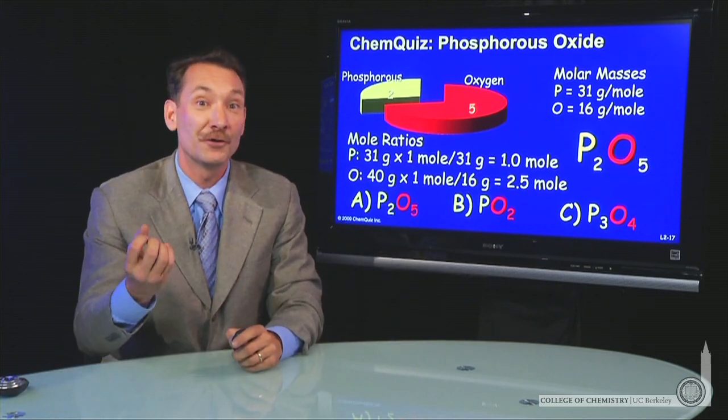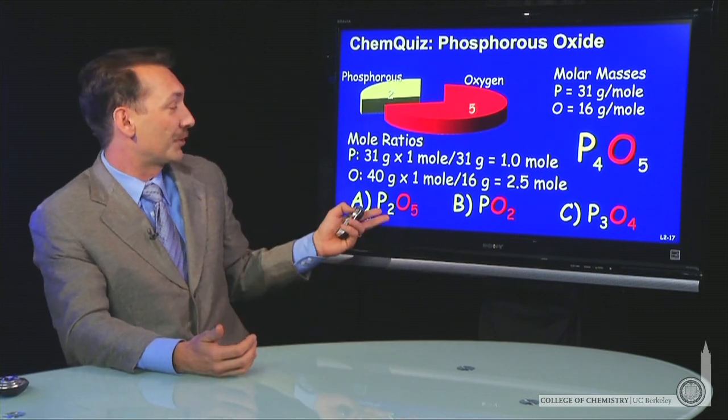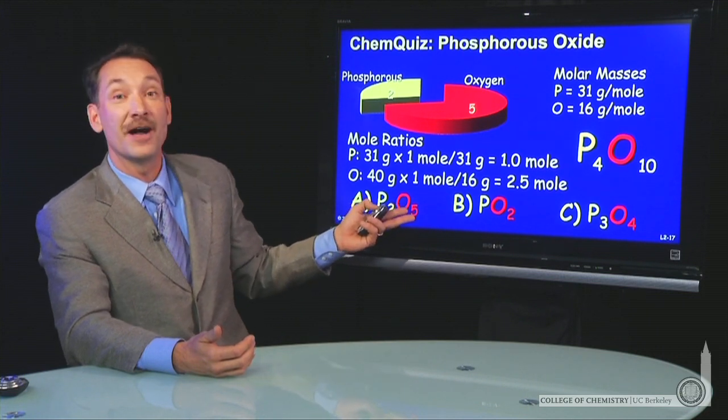So the empirical formula of this phosphorus oxide is P2O5. The correct answer is A, P2O5.